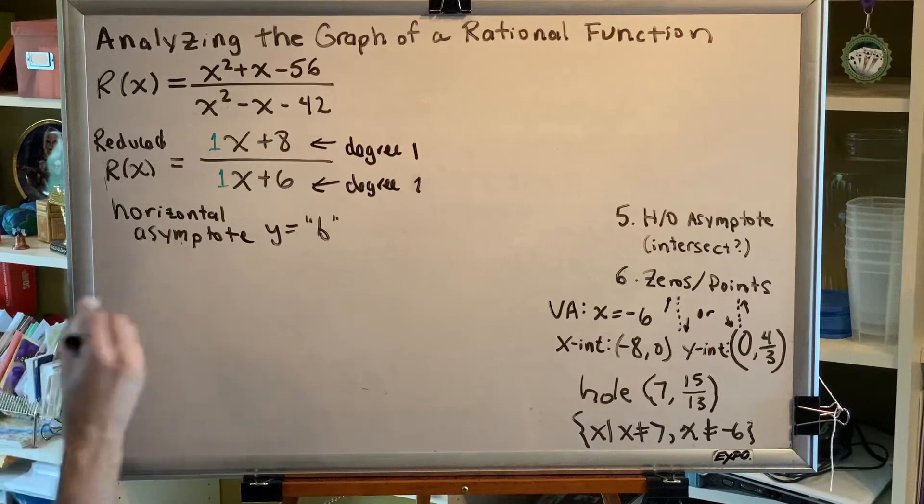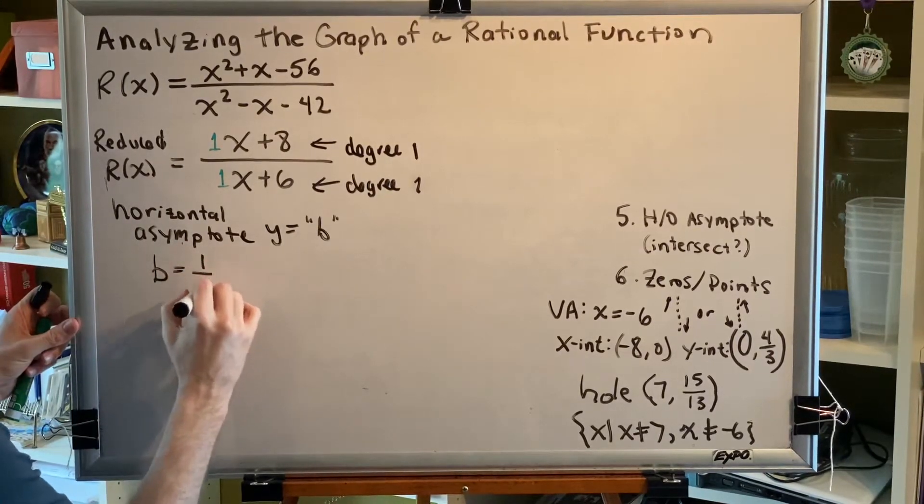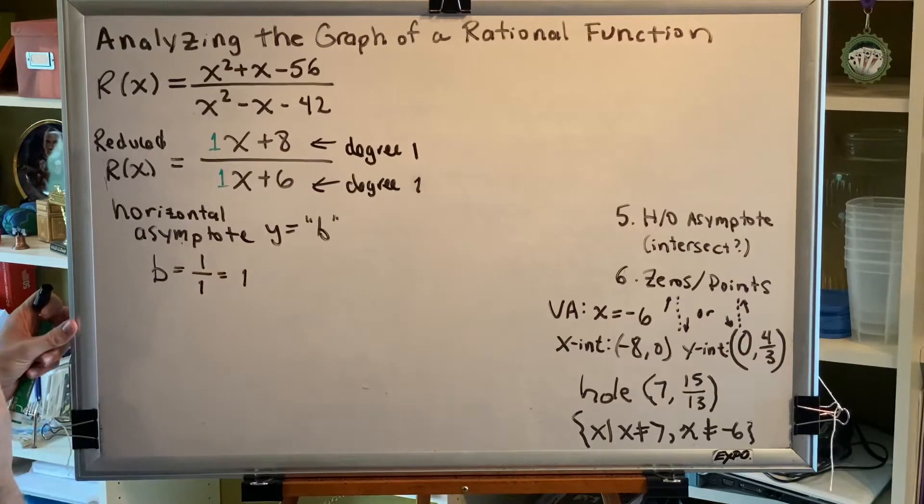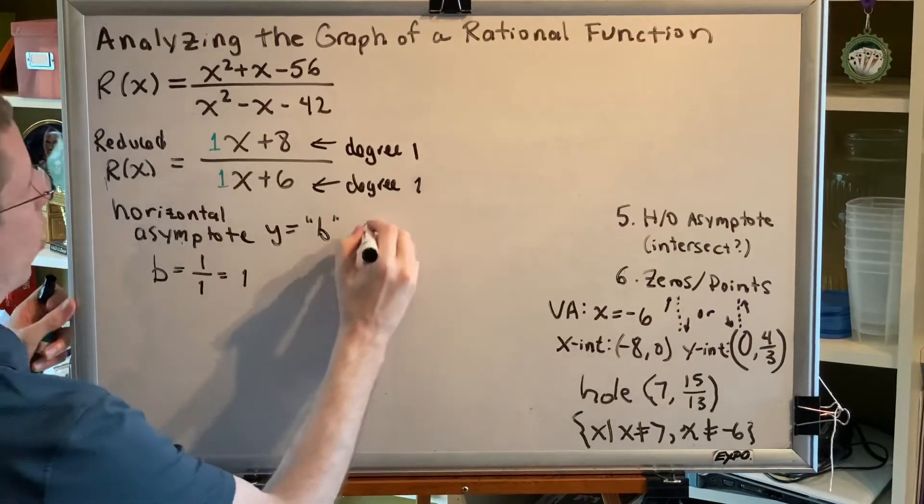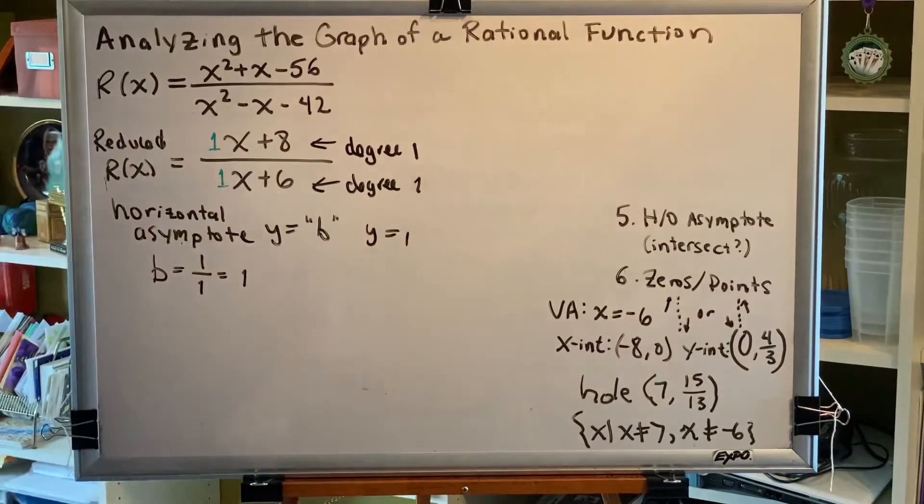So b in this problem is that ratio, 1 divided by 1, which is simply 1. So we get our horizontal asymptote y equals 1.